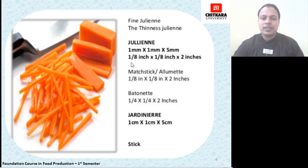Then comes batonnet, also known as the French fry cut, which measures 1/4 x 1/4 x 2 inches. And then jardiniere, which is also the shape given to French fries or some vegetables for giving them eye appeal. Jardiniere is also known as the stick cut.